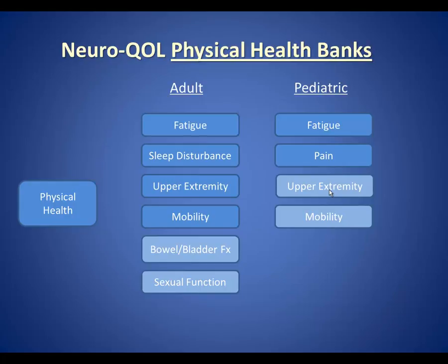For children and adolescents, NeuroQual contains measures of fatigue, pain, upper extremity, and mobility. Pediatric upper extremity and mobility measures are not fully developed into item banks. For adults, bowel and bladder function and sexual function measures are not fully developed either.